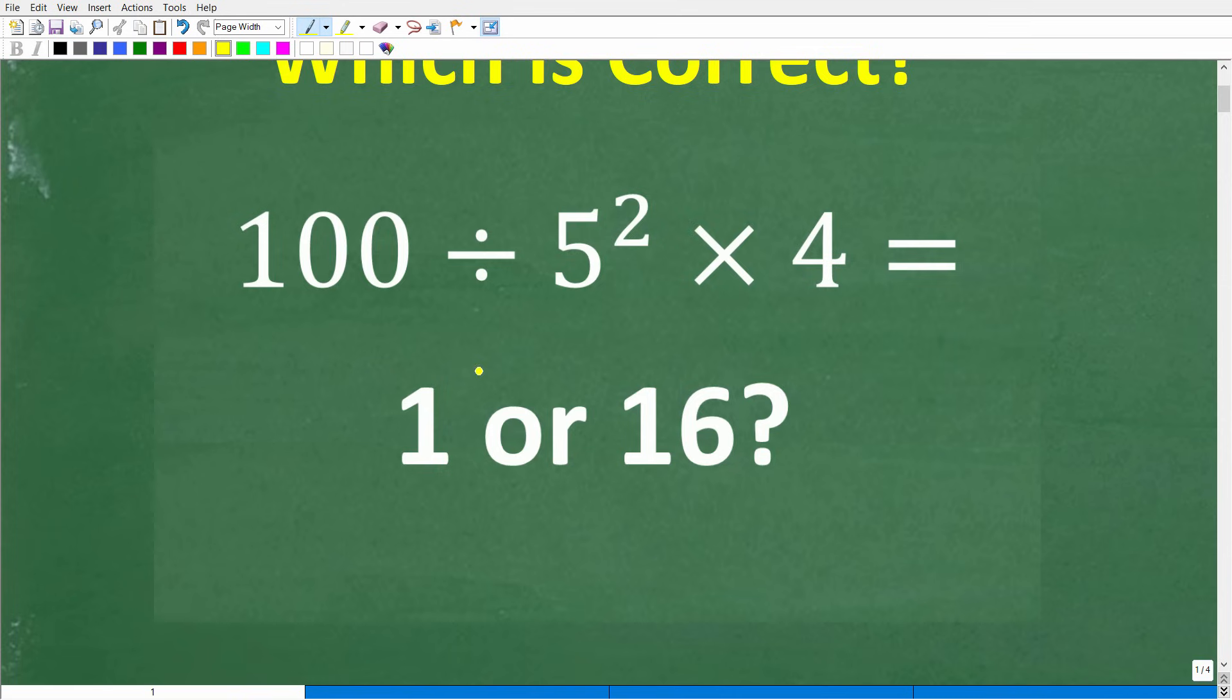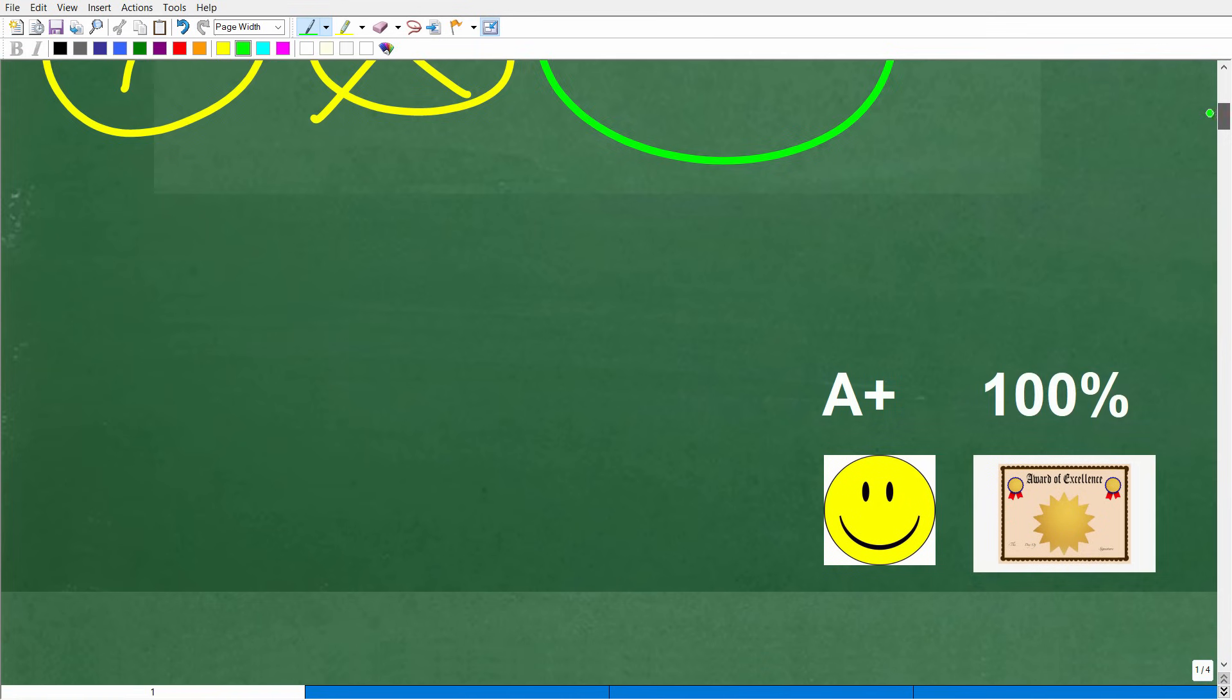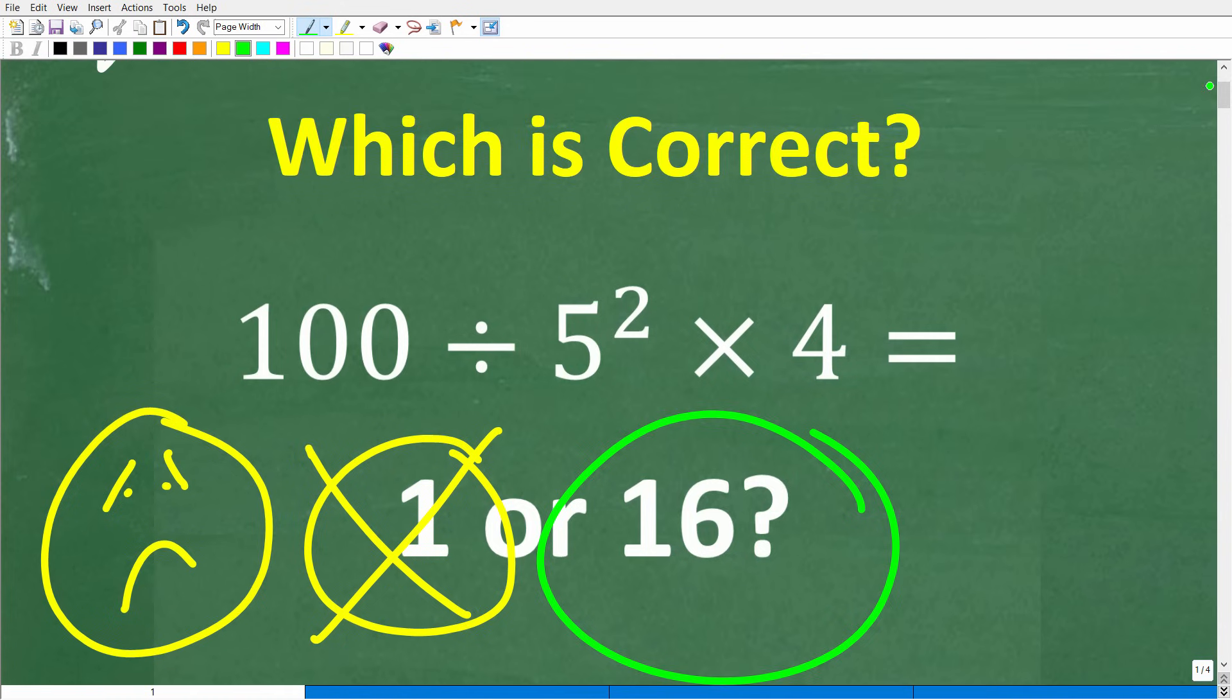So if you answered 1, well, guess what? That is incorrect. So unfortunately, you have a little sad face here. But don't be sad because you're going to learn something that's probably one of the most common mistakes when it comes to basic math. And obviously, the correct answer is 16. And if you answered 16, well, indeed, you're going to get a happy face and a plus 100% and a certificate of excellence for being a certified professional expert in basic mathematics. Congratulations.